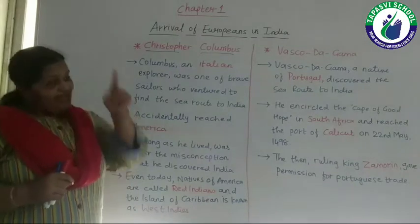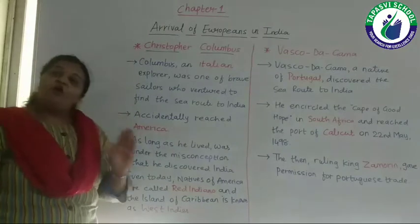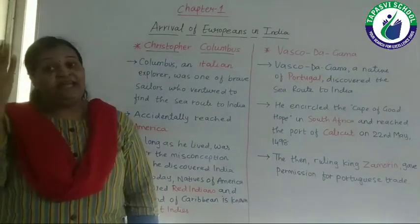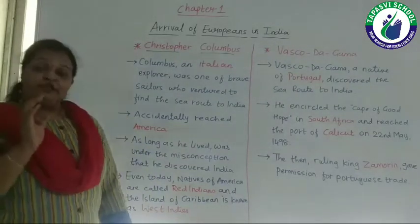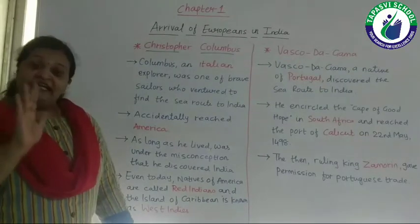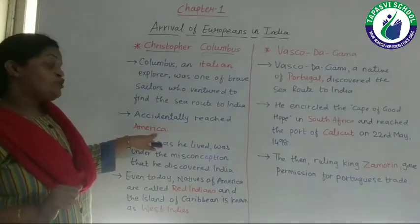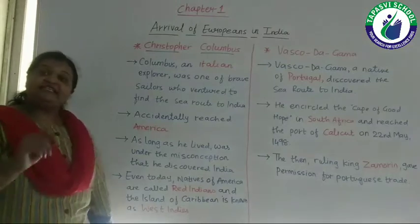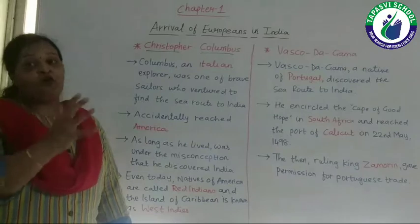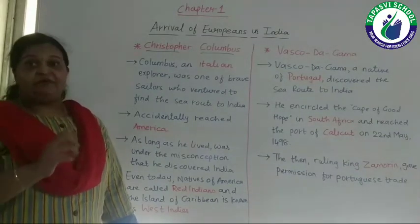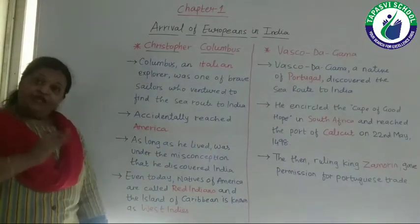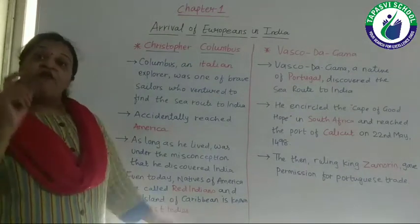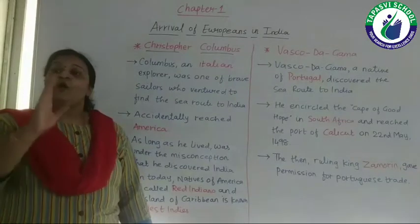Whatever sea route Columbus took, he wanted to come to India, but accidentally he reached America. As long as Columbus was alive, he was under the misconception — a wrong belief — that he had found a new sea route to India. But it wasn't correct. India wasn't found out yet. So even though he reached America, he believed he had discovered India. Still today, the natives of America are called Red Indians, and the island where he reached is known as West Indies.